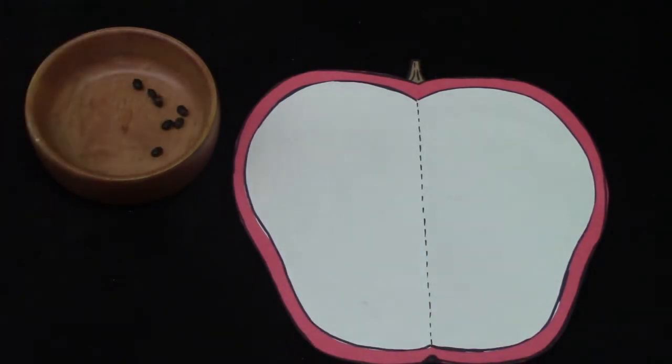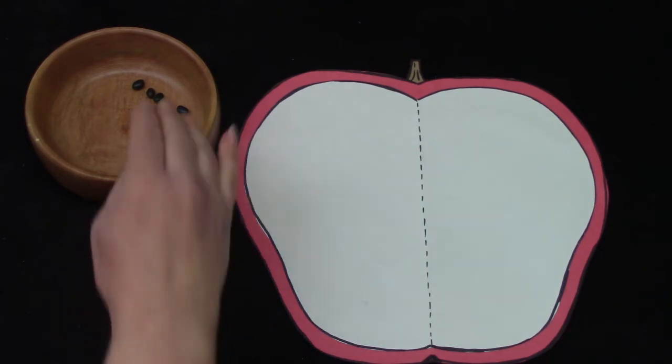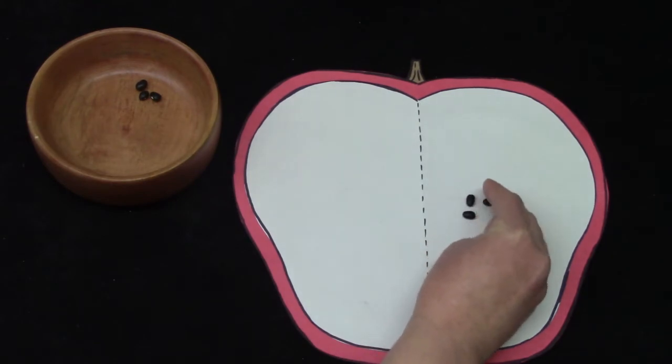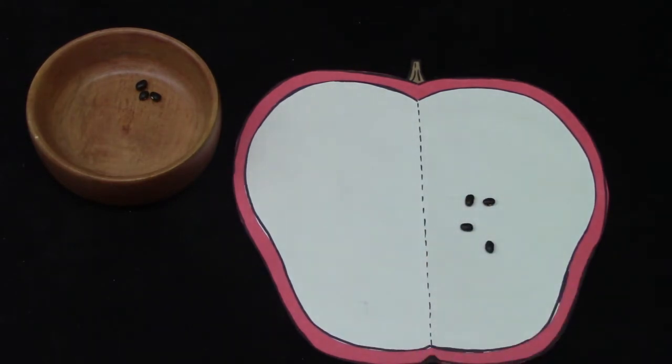And I'm going to put some more seeds in our bowl. Now I am going to take some of our seeds and put them on one side of our apple. Hmm, that looks familiar. I have one, two, three, four. That's the same as before.